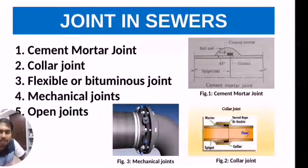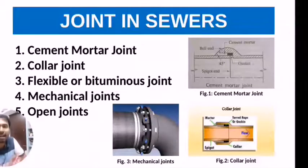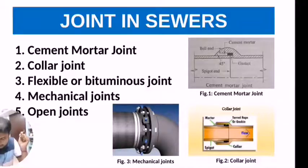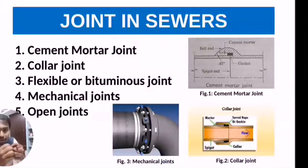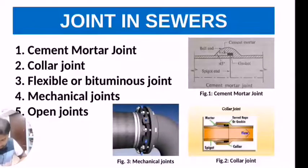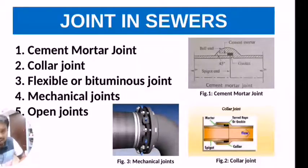In the mechanical joint, some mechanical devices like flanged rings, nuts, and bolts are used to join the ends of the sewer pipe. This type of joint is generally used for metallic sewers such as cast iron and steel. In the open joint, the ends of the sewer are placed together with no filler material used.